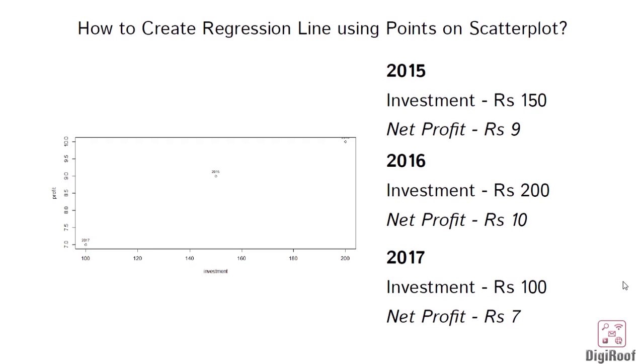In 2015, the company saw a profit of 9 rupees with an investment of 150 rupees. Similarly, in 2016 and 2017, the company made a profit of 10 rupees and 7 rupees with an investment of 200 and 100 rupees respectively. Let's move to R for looking at the scatter plot made from this example.